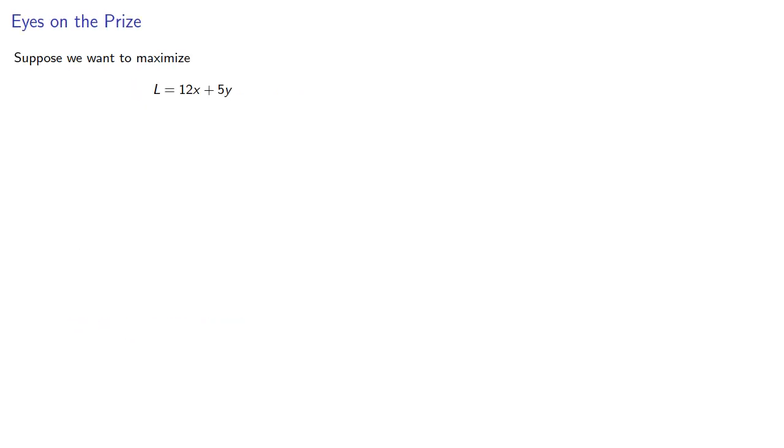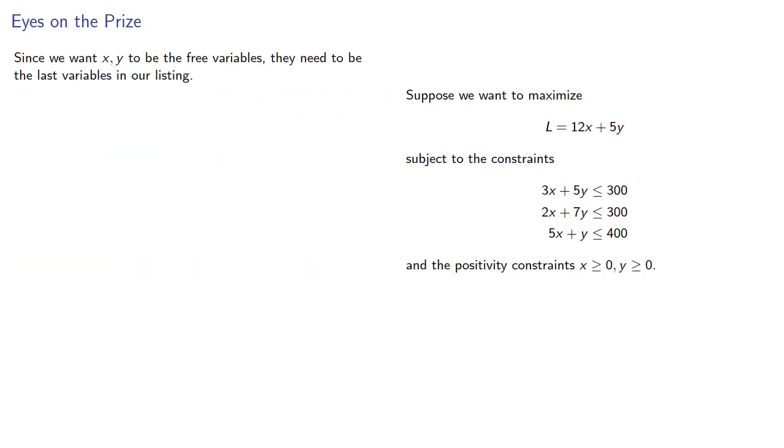For example, suppose we want to maximize an objective function subject to a set of constraints and the positivity constraints. Since we want x and y to be the free variables, they need to be the last variables in our listing. Introducing these slack variables gives us our system.